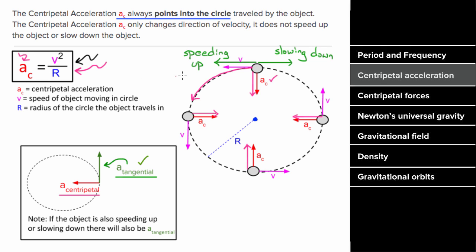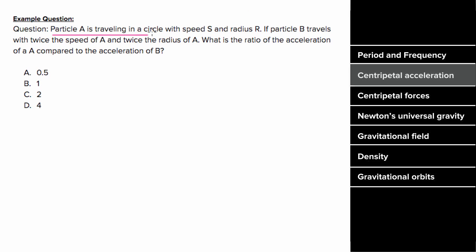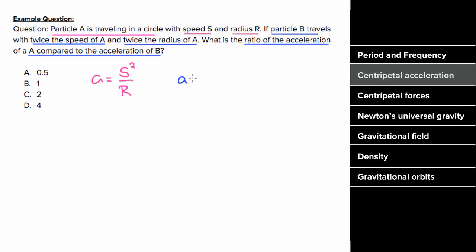So what's an example problem involving centripetal acceleration look like? Let's say particle A is traveling in a circle with constant speed s and radius r. If particle B is traveling in a circle with twice the speed and twice the radius of A, what's the ratio of the acceleration of particle A compared to particle B? Particle A has centripetal acceleration s squared over r. Particle B has acceleration with twice the speed squared over twice the radius, giving four over two — a factor of two — times s squared over r. So the ratio of particle A's acceleration to particle B's is one half.